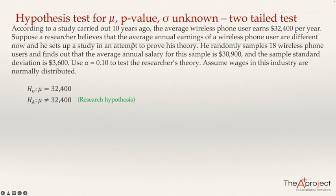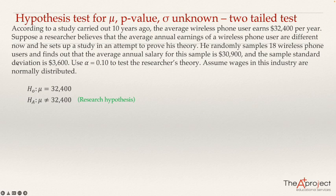Because we are going to use the p-value approach, we immediately use the t-test statistic. We use the t-test because we don't know the population standard deviation — we only know the sample standard deviation. So the test statistic will be a t-value.